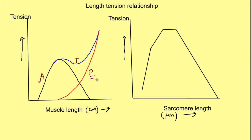Even without stimulation, the muscle develops tension — it is like a spring. If we stretch the spring, there will be tension developing in it. That is passive tension. The second type is active tension, which develops when a muscle is stimulated. You can understand it in terms of the force generated. In this video we will focus on the relationship between the length and active tension in the muscle.